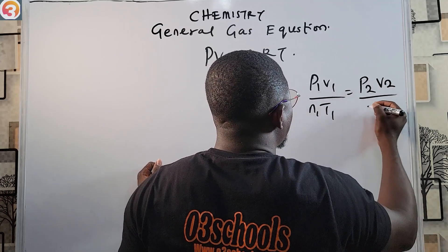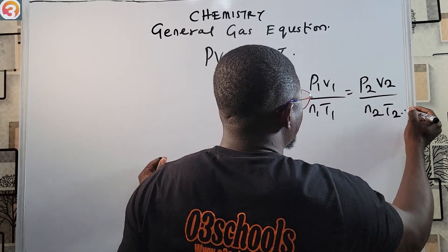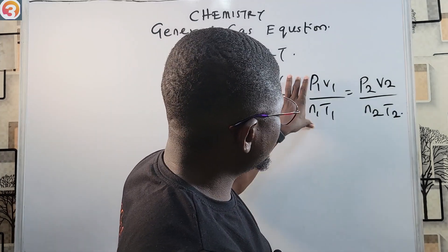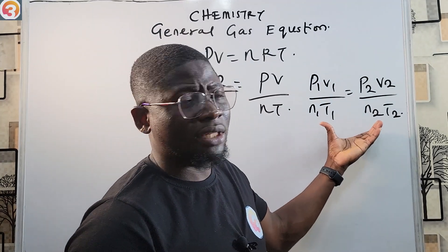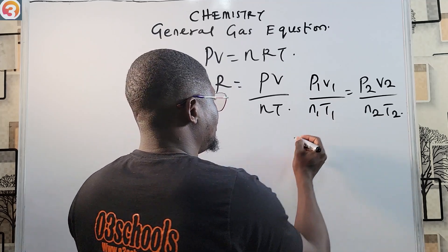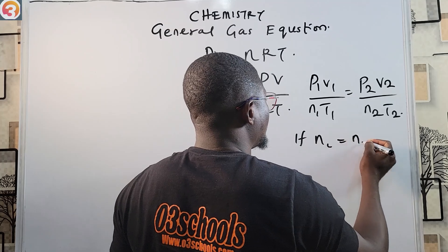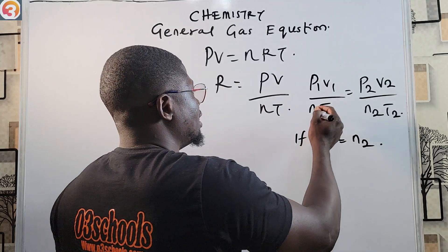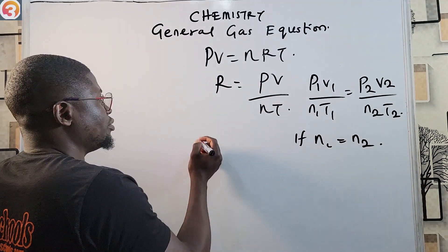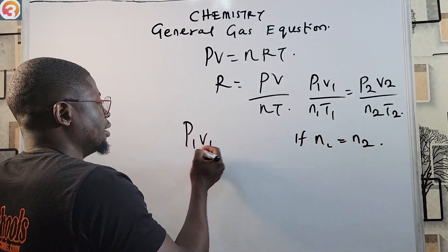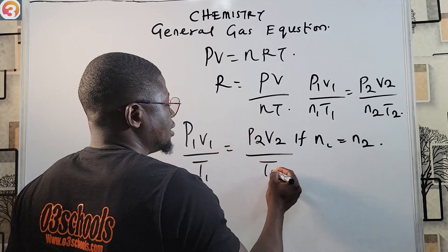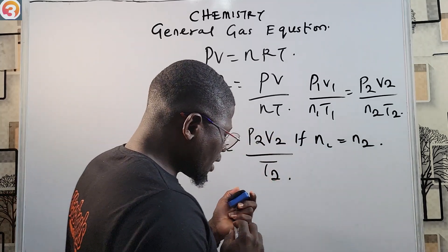Since the gas constant is indeed constant at any time, we have a new expression: P1V1 over n1T1 equals P2V2 over n2T2. Now, if the amount of gas — the number of moles — is the same, meaning n1 equals n2, they cancel out, and what is left is P1V1 over T1 equals P2V2 over T2.